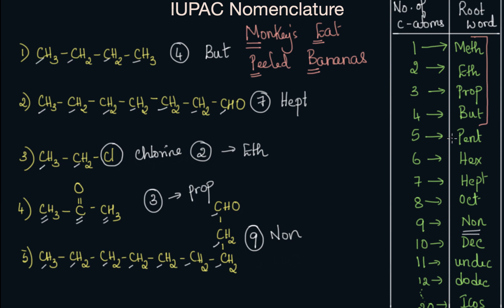To summarize, in this video we studied about the root word. The root word refers to the total number of carbon atoms present in a parent chain. If I give you any compound, just by counting the total number of carbons, we get the root word. Hope you have understood.